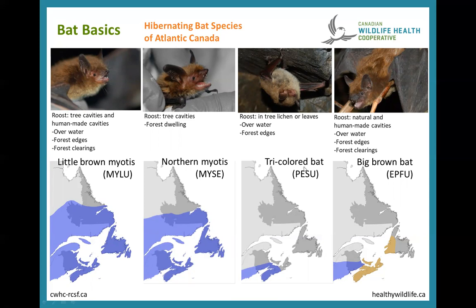The tricolored bat, as far as we know, is only found in southern Nova Scotia and southern New Brunswick in Atlantic Canada. It typically doesn't roost in cavities but instead roosts among the lichen and leaves of trees. Similar to the little brown myotis, it hunts over open water and at forest edges — a more open-area forager.